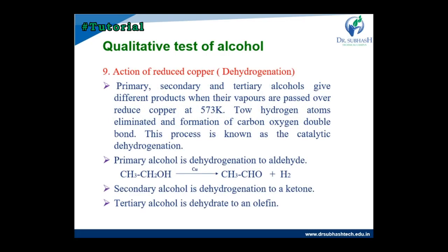The ninth test is the action with reduced copper — catalytic dehydrogenation. Primary, secondary, or tertiary alcohols give different products when their vapours are passed over reduced copper at 573 Kelvin temperature. Two hydrogen atoms are eliminated and a carbon-carbon double bond is formed. This process is known as catalytic dehydrogenation.